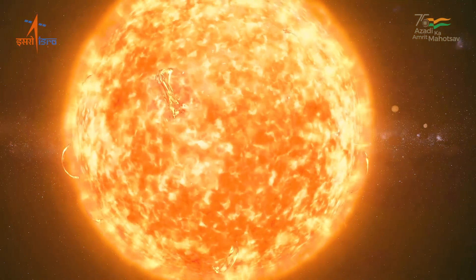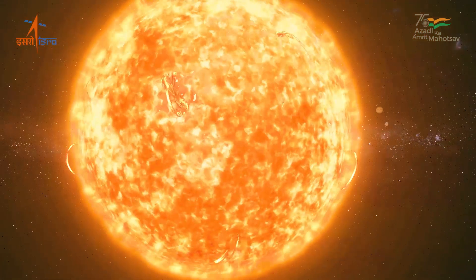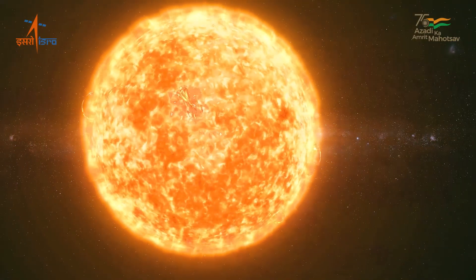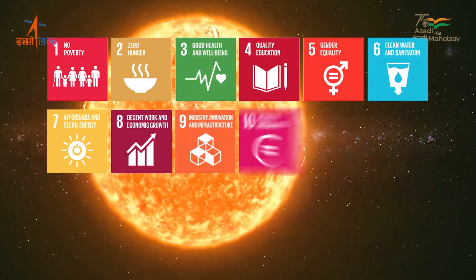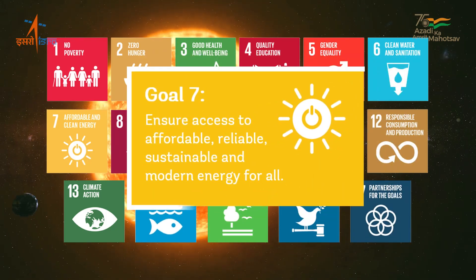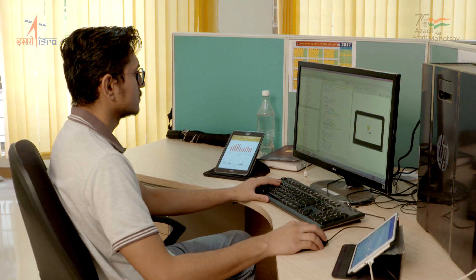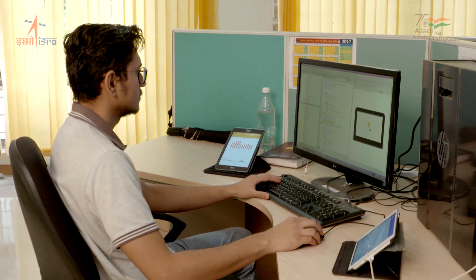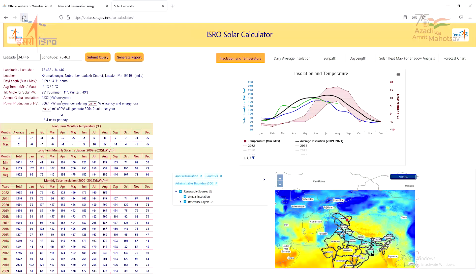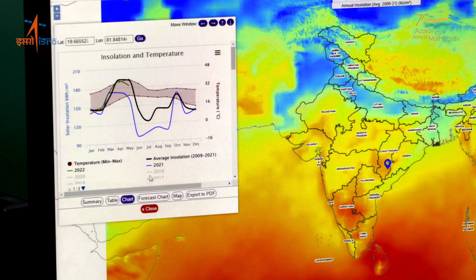Solar energy is one of the most sustainable forms of renewable energy, and its promotion is likely to play a major role in the realization of Sustainable Development Goal 7. Computation of solar energy potential is essential to select optimum locations for solar power plants and rooftop installations. ISRO has developed the Solar Calculator for the World.